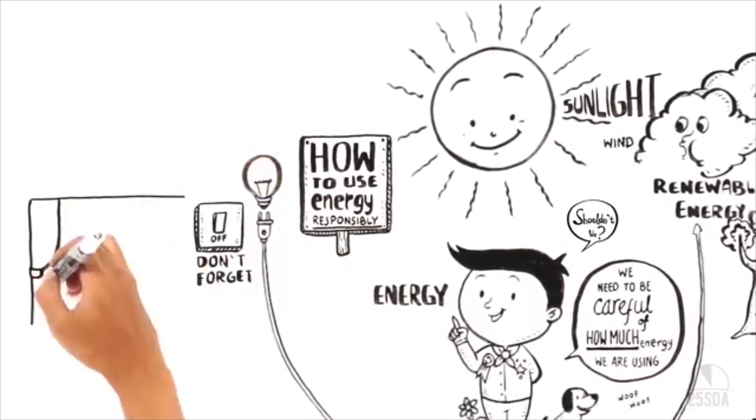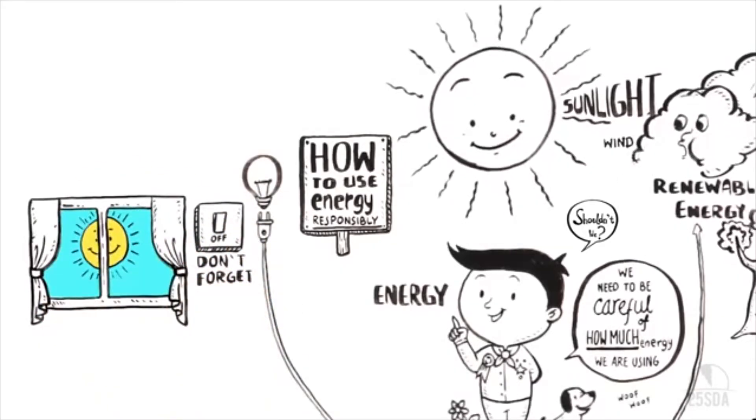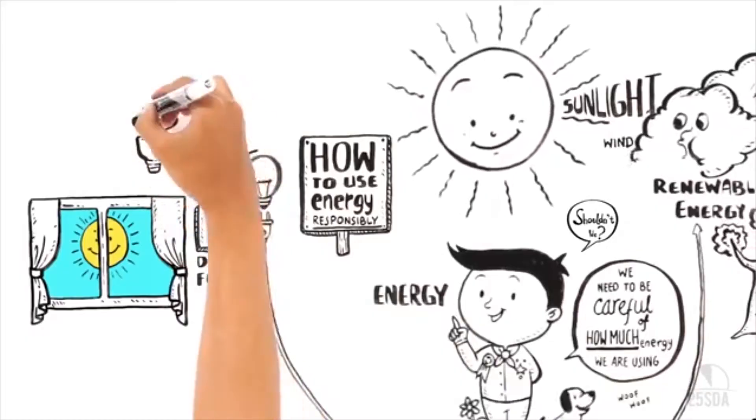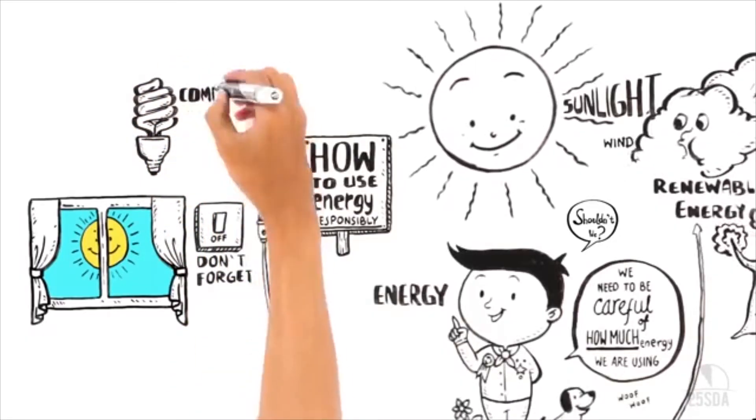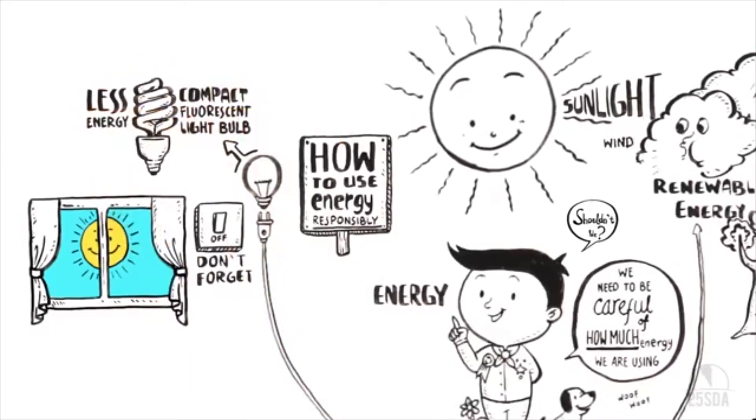And on a sunny day, why not open the curtains and just use natural light? It's simple: take out incandescent light bulbs and switch them to compact fluorescent bulbs - these use a lot less energy.